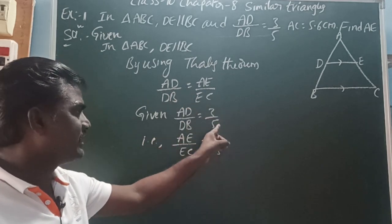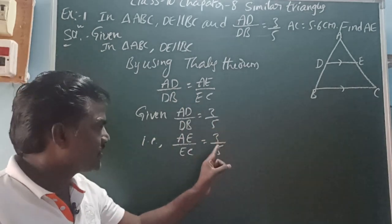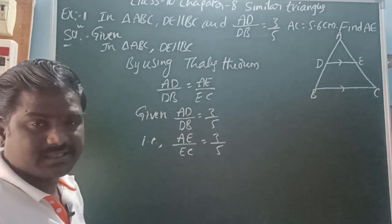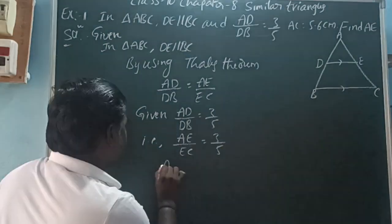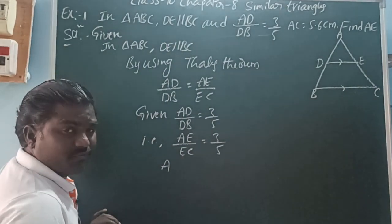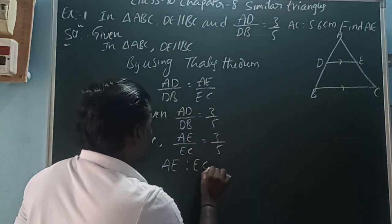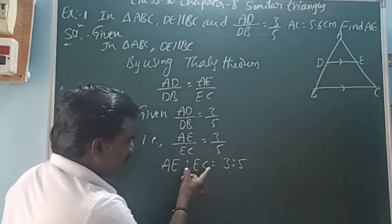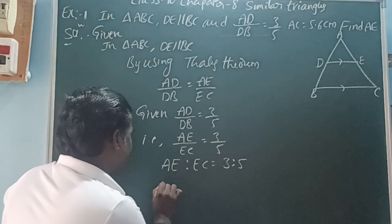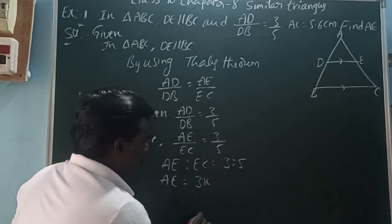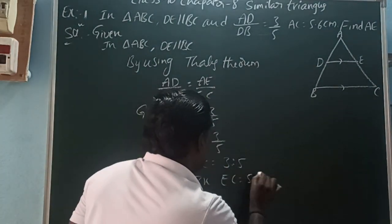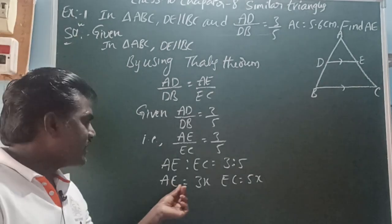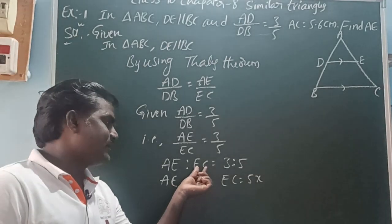By the Thales theorem, AD by DB equals AE by EC. Since AD by DB is 3 by 5, AE by EC is also 3 by 5. AC is given as 5.6. So AE represents 3 parts and EC represents 5 parts. Let each part equal x, so AE equals 3x and EC equals 5x.